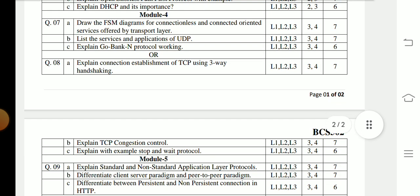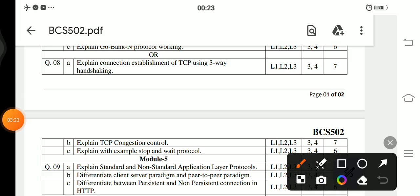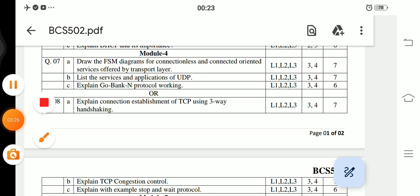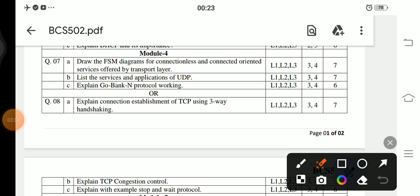From Module 4, Question number 7a: Draw an FSM diagram for connectionless and connection-oriented services offered by the transport layer. 7b: List the services and applications of UDP. 7c: Explain the Go-Back-N protocol working. Question number 8a: Explain the connection establishment of TCP using three-way handshaking. 8b: Explain the TCP congestion control protocol. 8c: Explain with an example Stop and Wait protocol.